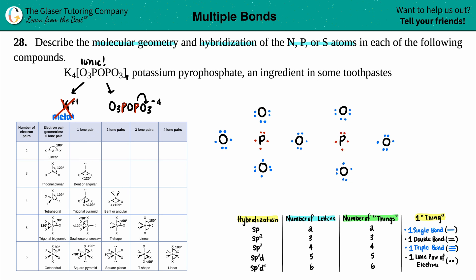We're single-bonding first — dot to dot — just to see if any of these atoms already have the octet. We connect each oxygen to phosphorus with a single bond to start and check the electron counts.